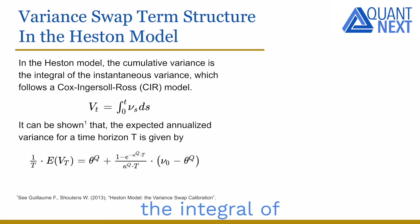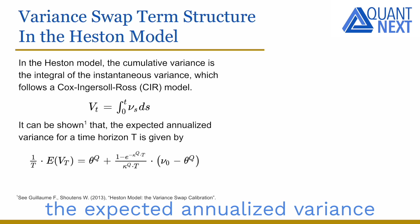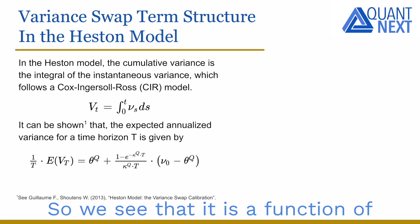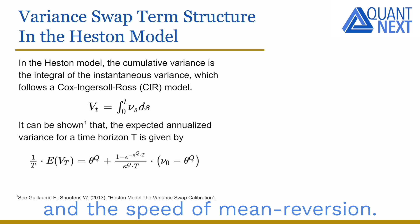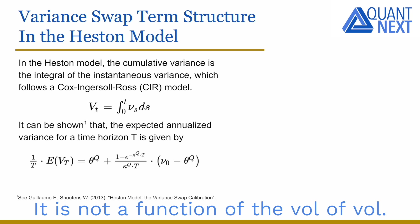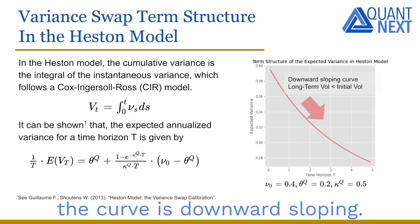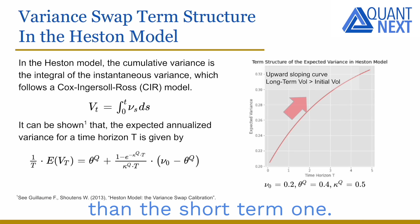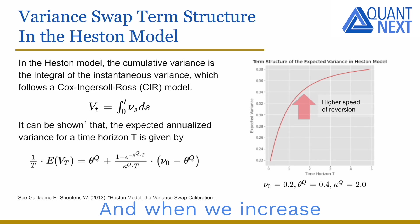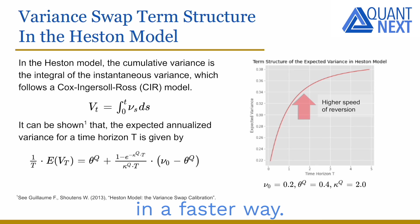The cumulative variance is the integral of the instantaneous variance, and it can be shown that the expected annualized variance is given by a formula that is a function of the initial variance, the long-term mean, and the speed of mean reversion — but not of the vol-of-vol. When the long-term volatility is lower than the short-term one, the term structure curve is downward sloping; it is upward sloping when the long-term volatility is higher. Increasing the speed of reversion steepens the front end of the curve, as volatility converges to its long-term average more quickly.